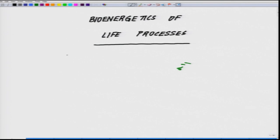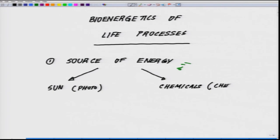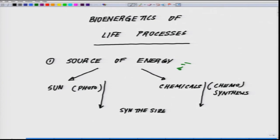This is the title of the course. What will we be dealing with here? The first thing is the source of energy, which we discussed. The source of energy could be the sun — photo — or chemicals which break down and generate energy — chemo — forming the basis of synthesis: the process where chemicals or the sun have been used to synthesize energy-rich molecules.